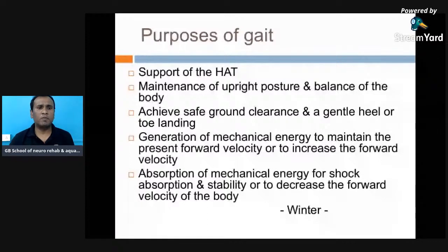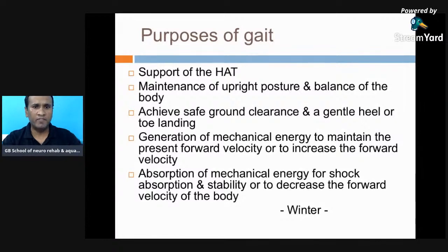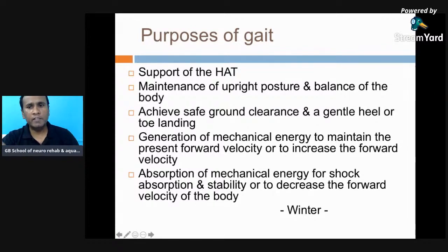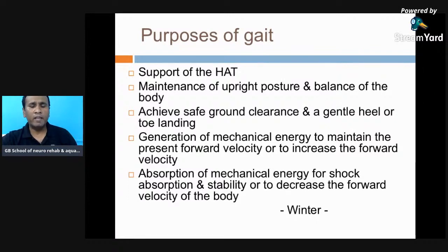Before discussing kinetics and kinematics, we should focus on the purpose of gait. The first purpose is to support the head, arm, and trunk — the passenger must be supported and made comfortable while walking. The second purpose is maintenance of upright posture and balance throughout gait. Imbalance of the upper body is simply called abnormal gait. Third, achieving safe ground clearance and gentle heel strike and toe landing — the foot must clear smoothly during swing phase and land gently during stance.